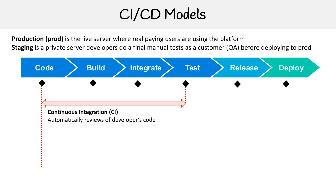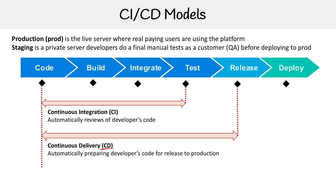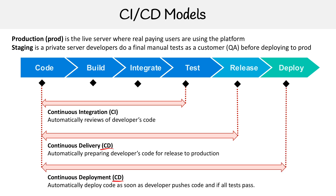The first one is continuous integration, short for CI, which automatically reviews the developer's code. The next one is continuous delivery — that's automatically preparing developers' code for release to production. And the last one is continuous deployment, which is automatically deploying code as soon as developers push code and all tests pass. You're going to notice that both of these have the same initialism — CD — which is a bit confusing. So if someone says CD to you, get clarification because they could mean delivery or deployment. So let's move into these individually and learn more about them.